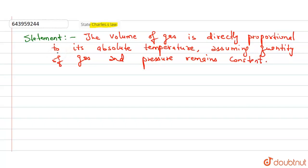So this was the statement given by Charles, which states that the volume of a gas is directly proportional to its absolute temperature, assuming quantity of gas and pressure remains constant. You can also make it easier by this equation.